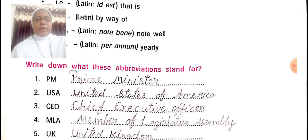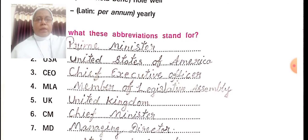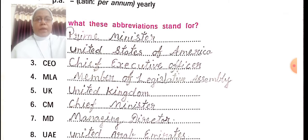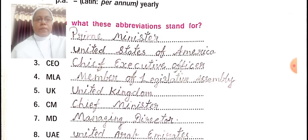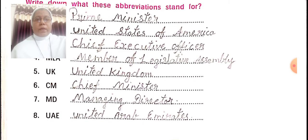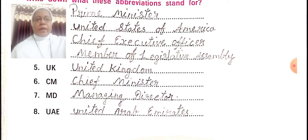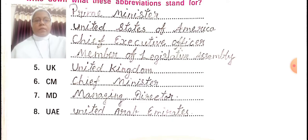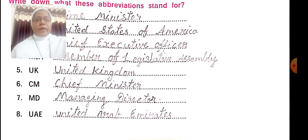PM — Prime Minister. USA — United States of America. CEO — Chief Executive Officer. MLA — Member of Legislative Assembly. UK — United Kingdom. CM — Chief Minister. MD — Managing Director. UAE — United Arab Emirates.